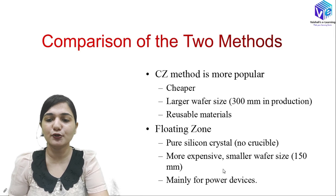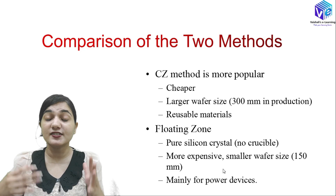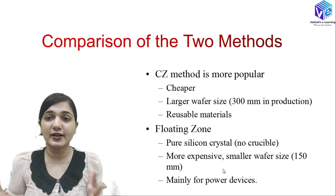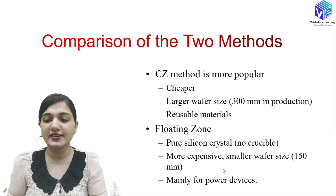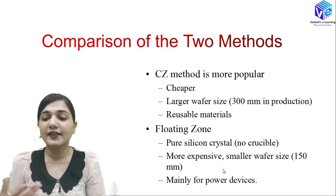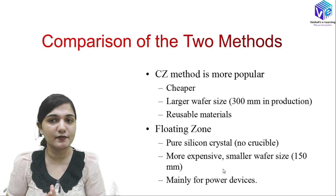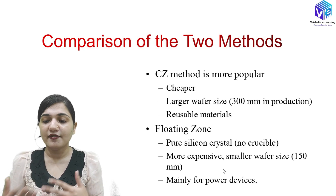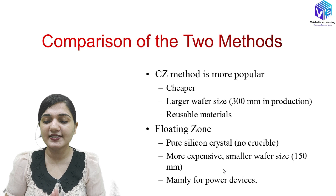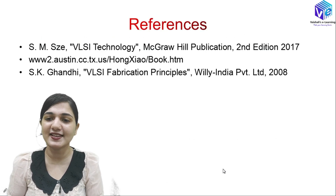This is the comparison of the two techniques. CZ is the cheaper and most popular technique for silicon fabrication — it allows larger wafer sizes and uses reusable materials. In the floating zone method we get purer silicon crystals, there is no crucible, but it is more expensive with smaller wafer sizes. It is used mainly for power devices.